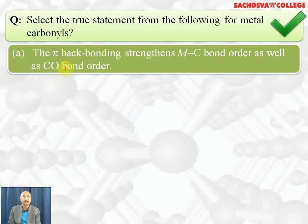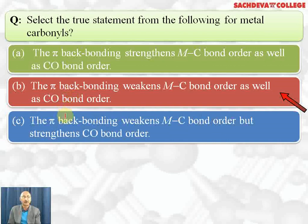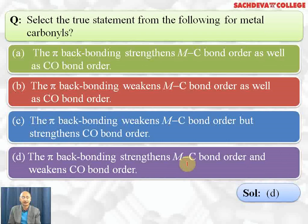Select the true statement about pi backbonding in metal-carbonyl complexes. Option A: pi backbonding strengthens both the M–C bond order and the C≡O bond order. Option B: pi backbonding weakens both. Option C: pi backbonding weakens M–C and strengthens C≡O. Option D (correct): pi backbonding strengthens the M–C bond order and weakens the C≡O bond order. It strengthens the metal-carbon bond through both sigma and pi bonding, and weakens the C≡O bond because lone pair electrons are donated to the metal's d orbital.